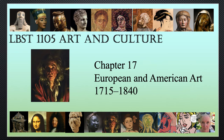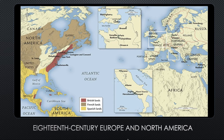Hello again. I'm ready to present chapter 17, which covers European and American art in the 18th century. The chances are good that you're familiar with the Industrial Revolution from your education, but you may not know very much about the Enlightenment.